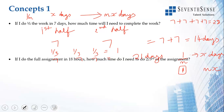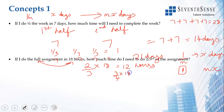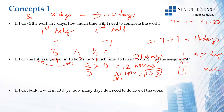The full work is done in nx days. Now the reverse: if I do the full assignment in 18 hours, how much time do I need to do two thirds of the assignment? To do a fraction of the work, you will take less time. If I have to do two thirds of the work, I need two thirds of 18 hours, which is 12 hours. To find the fraction of the work, multiply the total time by that fraction.